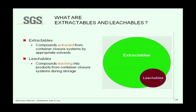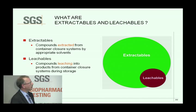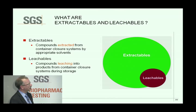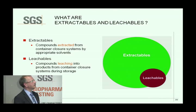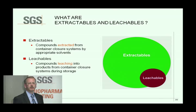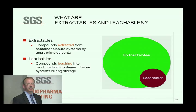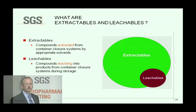This diagram shows that generally leachables are a small subset of extractables. You wouldn't expect as many leachables as you see extractables. But another important point to note is that they don't quite overlap. You can get compounds seen at the leachables phase which are not extractables — they're coming from further up your process, or from interactions between your drug product and your container closure system.